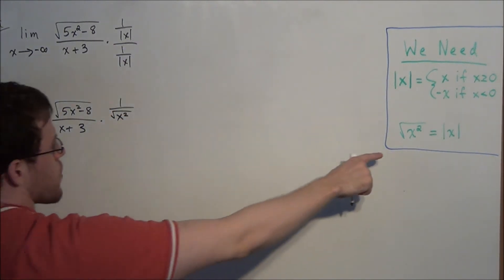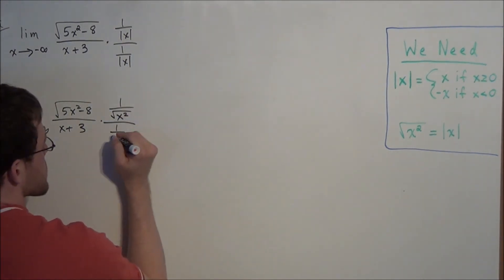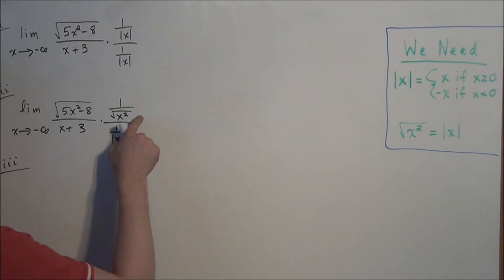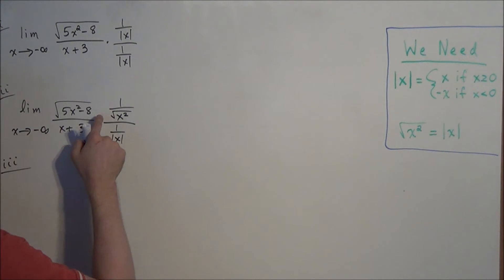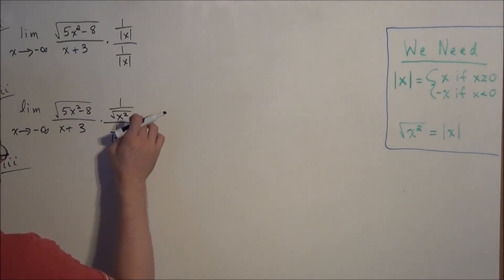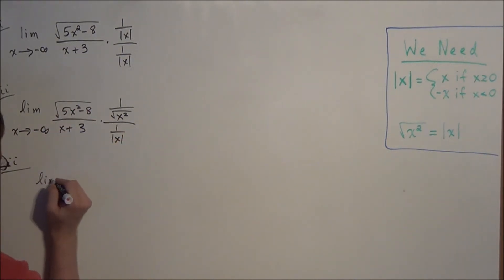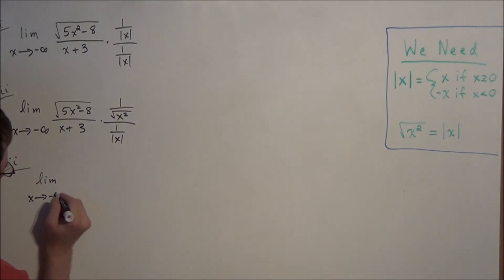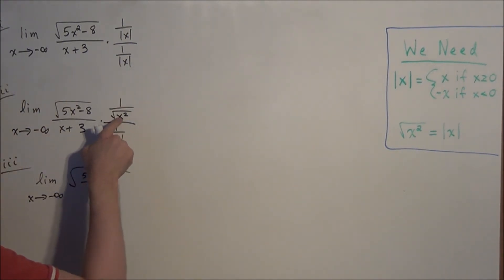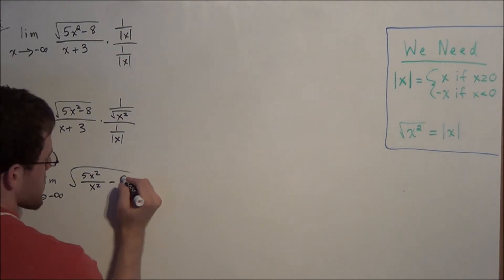Now we can make this substitution: we replace 1 over the absolute value of x with 1 over the square root of x squared in the numerator, and distribute x squared into the radical expression. When multiplying two radical expressions, they combine into a single radical. So we distribute 1 over x squared into 5x squared minus 8. We get the limit as x approaches negative infinity of the square root of 5x squared over x squared minus 8 over x squared.